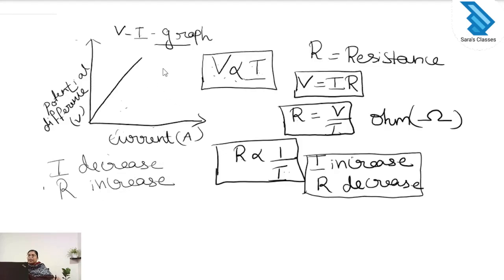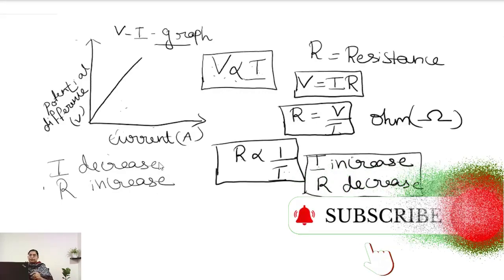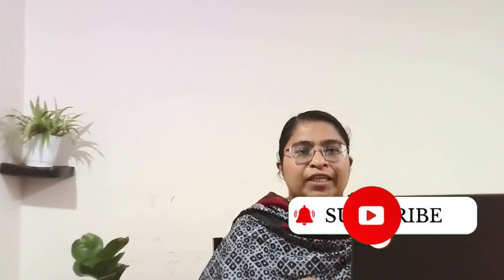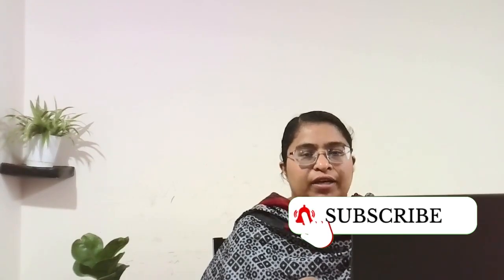These are the key things to study about Ohm's law and resistance of the conductor. Ohm's law says that at constant temperature, the voltage is directly proportional to the current, giving us V equals I times R, and R equals V by I. The unit of resistance is ohm, and resistance and current are inversely proportional — when current increases, resistance decreases, and when current decreases, resistance increases. Thank you for watching. In the next class, we will cover resistivity of the conductor and the factors affecting resistance.